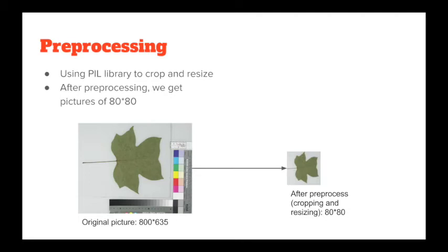To pre-process the data, we use the PIL library to crop and resize the pictures. The original pictures are of various sizes, but most of them are around 800 by 635. After cropping and resizing, we get all pictures at a size of 80 by 80.